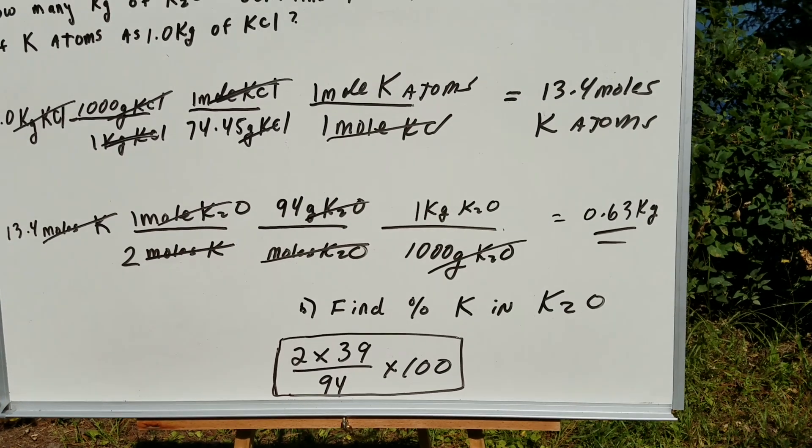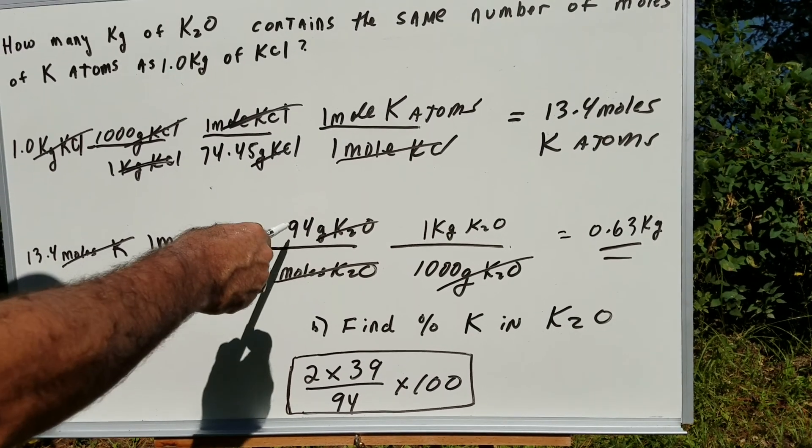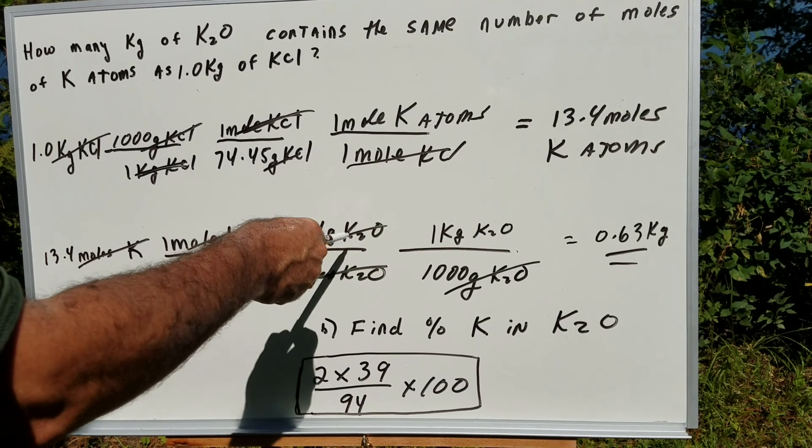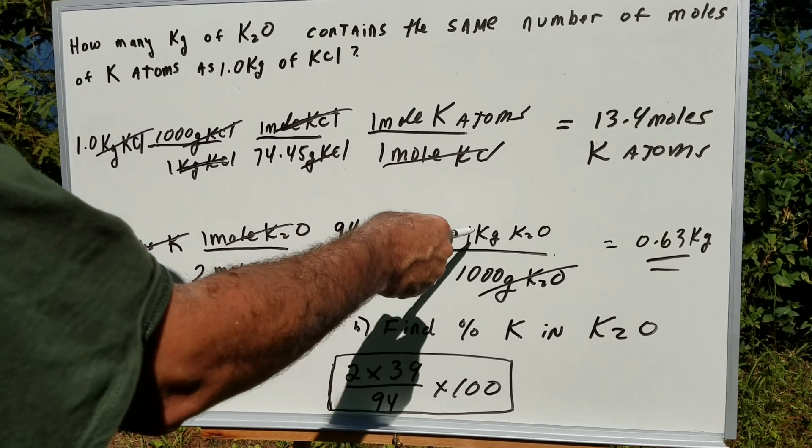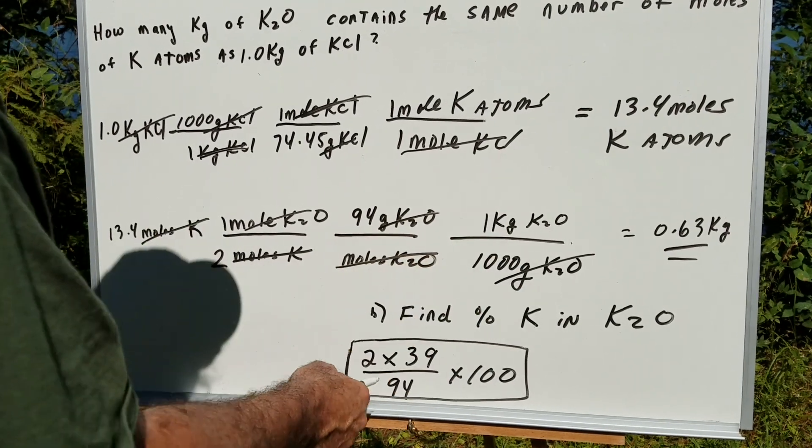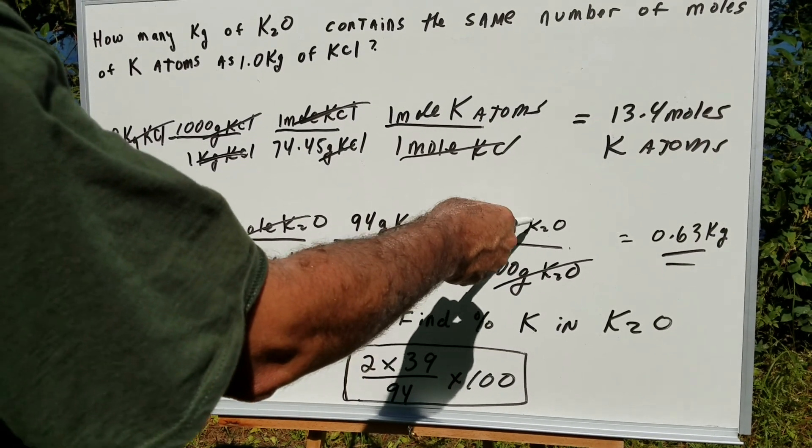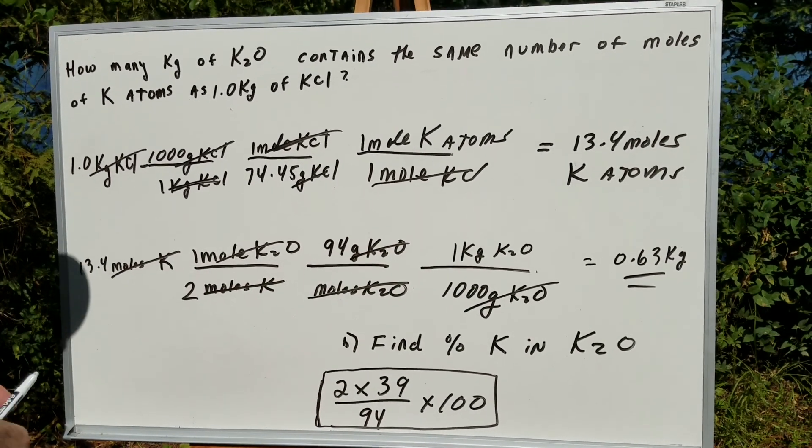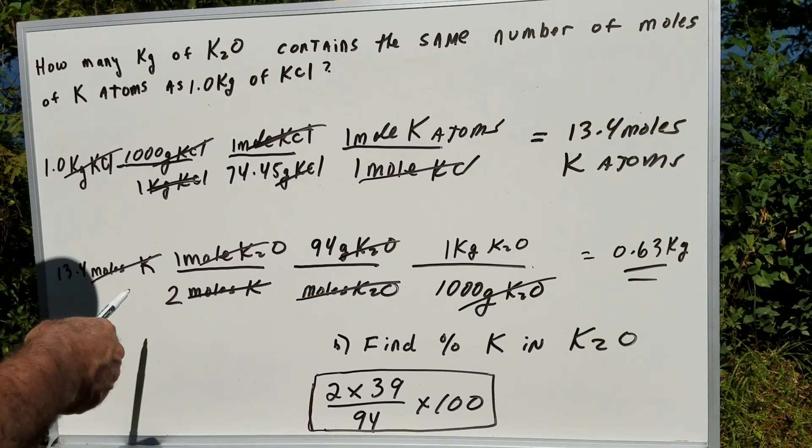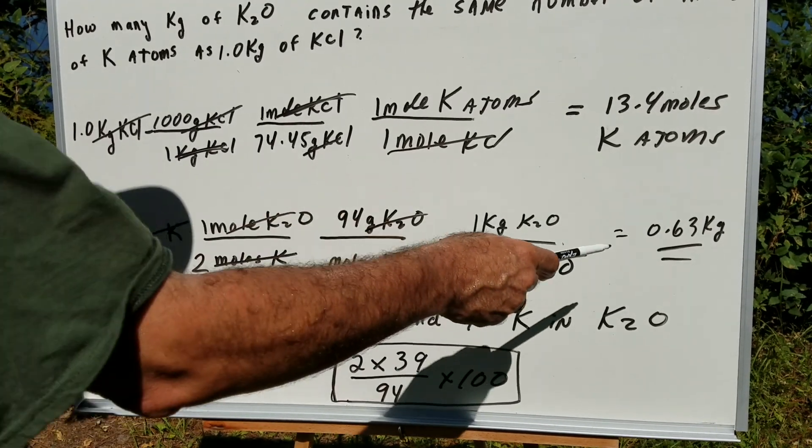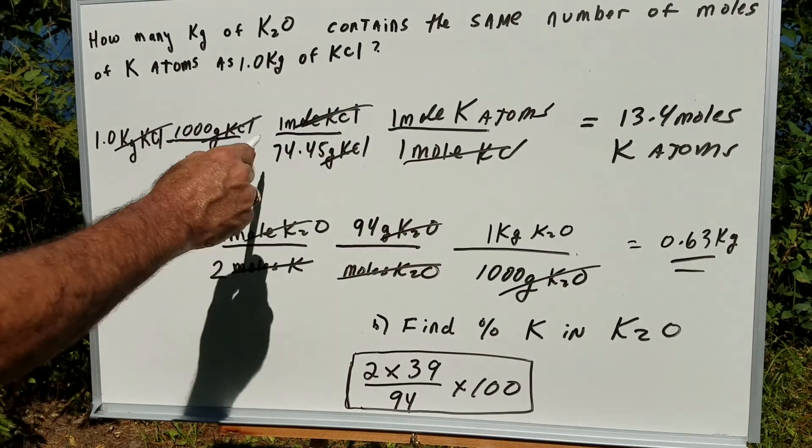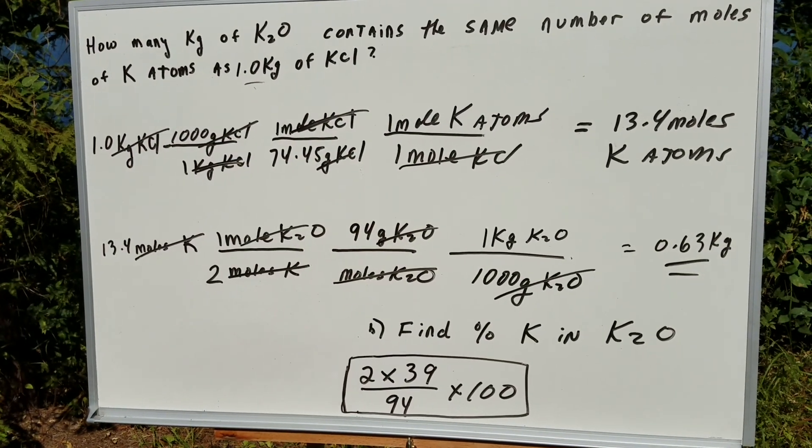the moles of potassium atoms cancel out and I now have 94 grams. That's the weight of K2O per mole. One kilogram is a thousand grams and we're now left with kilograms of potassium oxide. When you do the math, math isn't the nicest here, but with a calculator we got 0.63. Notice I kept it at two significant figures. My final answer, this is two significant figures.